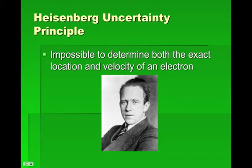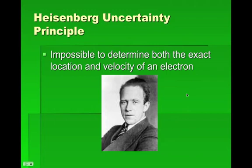Then we get to Heisenberg, who came up with the uncertainty principle. He basically said it's impossible to determine both the location and the velocity of an electron, because the simple act of finding an electron changes its velocity, and trying to measure its velocity changes its location. You can do one or the other — you can say there is a possibility of an electron being at this point in the electron cloud — but you can't determine both.